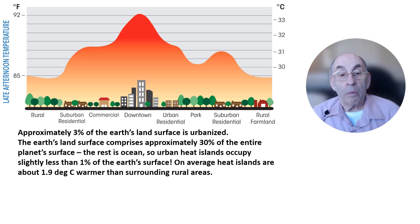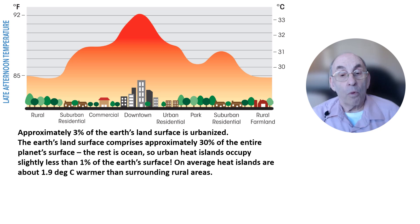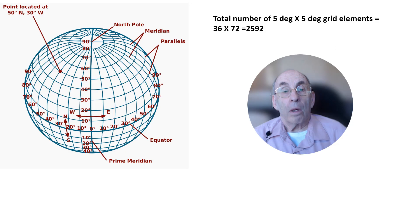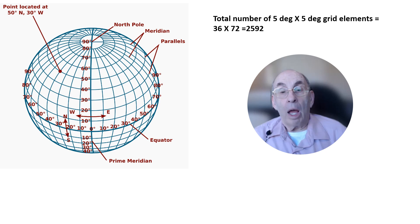So what we really are asking is: how much does that extra 1.9 degrees centigrade of warming in urban areas contribute to the global average temperature of the entire planet? To get the answer to that question, we need to understand how global average surface temperatures are computed.